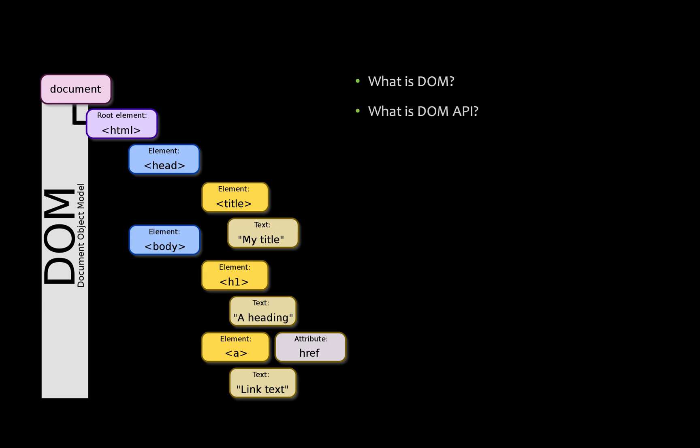DOM API is what JavaScript provides. If you have a document, the web page is accessible through the DOM API. DOM API is called via JavaScript. There is a set of functions. So what can you do with the DOM API?